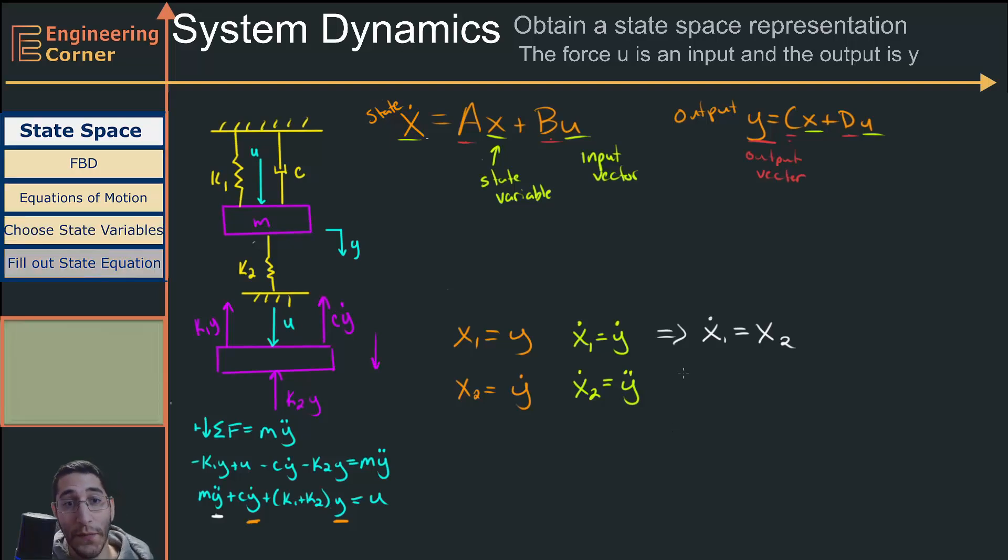So I know I need two states. This x dot right here is the derivative of my state. So this is going to be x1 dot, and this is going to be x2 dot. This is going to equal my A matrix times my state variables, which are x1 and x2, then it's going to be plus some matrix times my input vector.